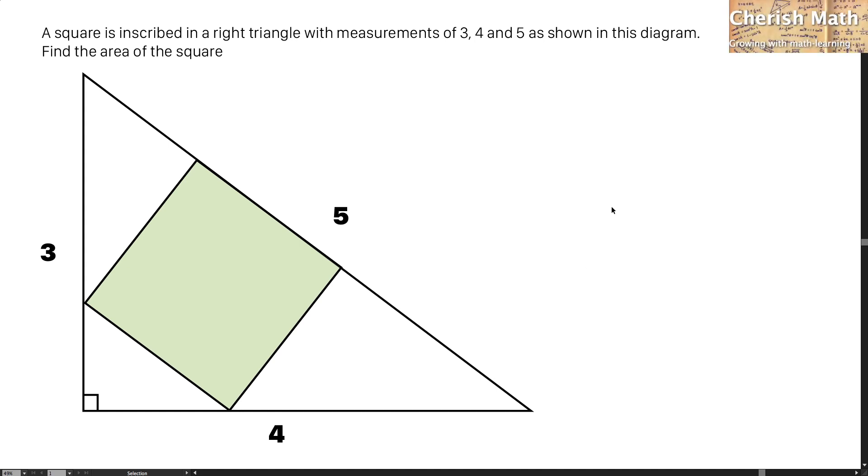Hi from Cherish Math. This is the question. A square is inscribed in a right triangle with measurements of 3, 4 and 5 as shown in this diagram. Find the area of the square.